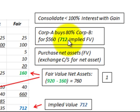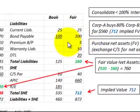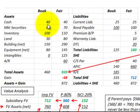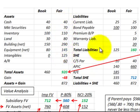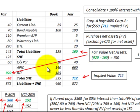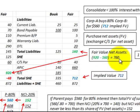The implied fair value is $712,000 — that's what we're going to have to calculate. To do that, first we have to calculate the fair value of the net assets. Looking at the balance sheet for the subsidiary, we take the total assets at their fair value of $920,000 less the fair value of the liabilities of $160,000, so the fair value of the net assets is $760,000.